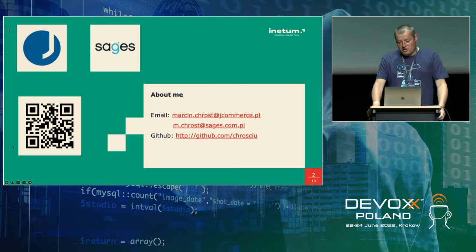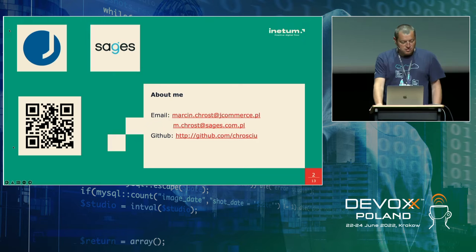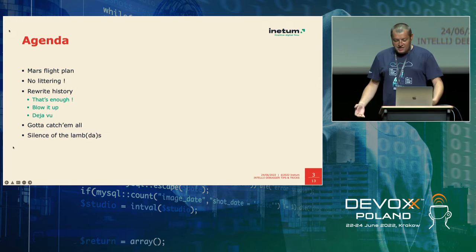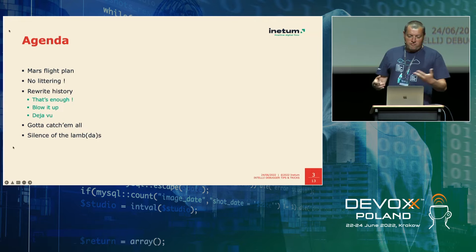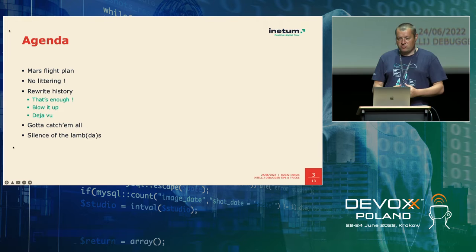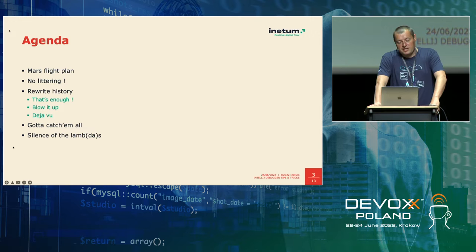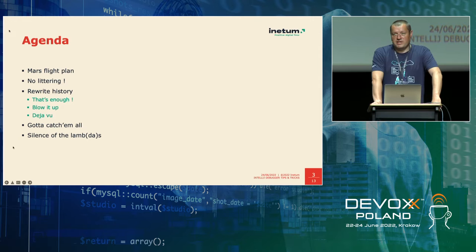After this short but necessary part, let's go directly to the debugging part and talk about the agenda. This may be a little mystery, because these points may seem not to be completely related with programming or debugging, but I'll try to explain it better. We will start from something like 'how to fly to Mars' — making a very complicated flight plan to go to another planet.